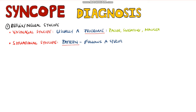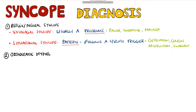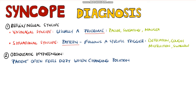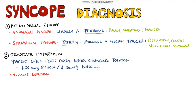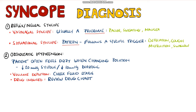Situational syncope would likely have a pattern, such as happening immediately following a specific trigger like defecation or coughing. Syncope due to orthostatic hypotension might feature in the history that the patient feels dizzy when standing up or changing positions. You can test for orthostasis by taking blood pressure supine, then at timed intervals standing. A drop of 20mmHg systolic or 10mmHg diastolic is a positive sign. Then review fluid status and the drug chart to rule out volume depletion or drug-induced causes.